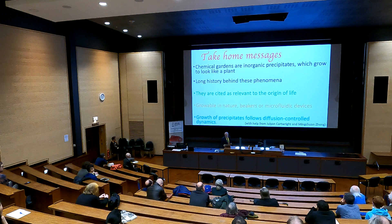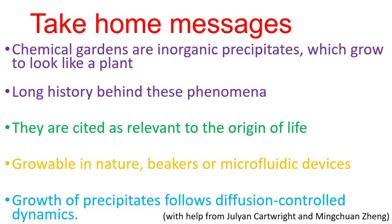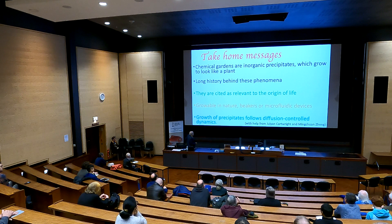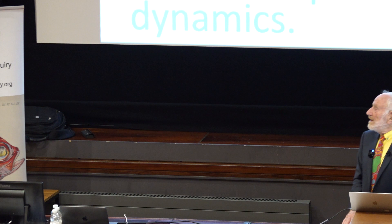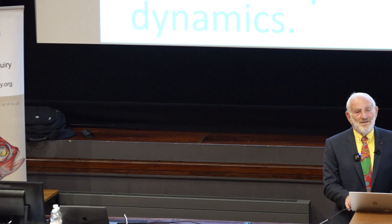The take-home messages are that chemical gardens are inorganic precipitates which grow to look just like a plant. We're trying to see quantitatively what they look like - there's been quite a lot of work but generally qualitative. They've been cited as related to the origin of life. They're easily growable in nature - it just takes an hour or so. We can analyse them because they follow diffusion-controlled dynamics, which we know quite well. Thank you very much for your patience.